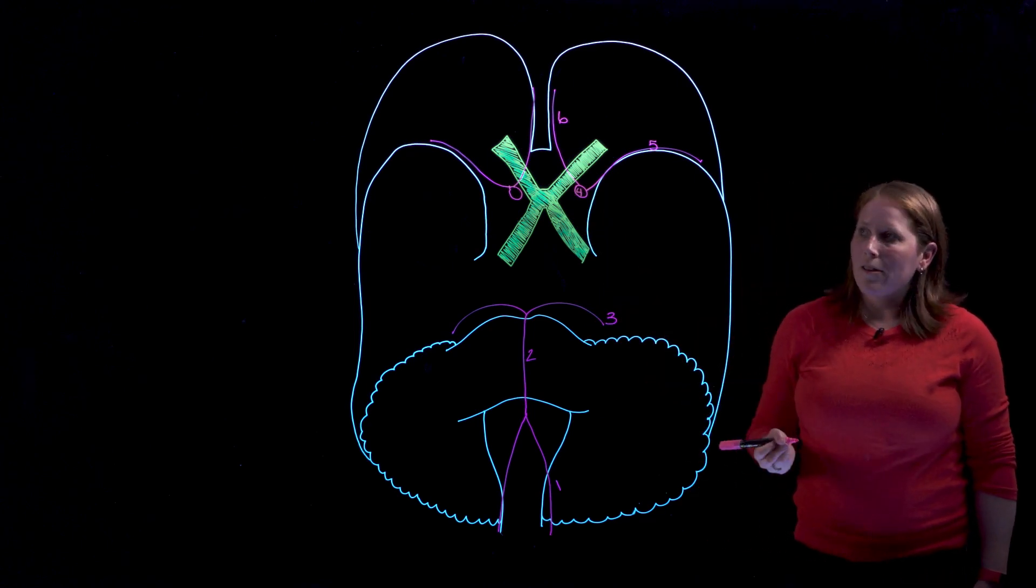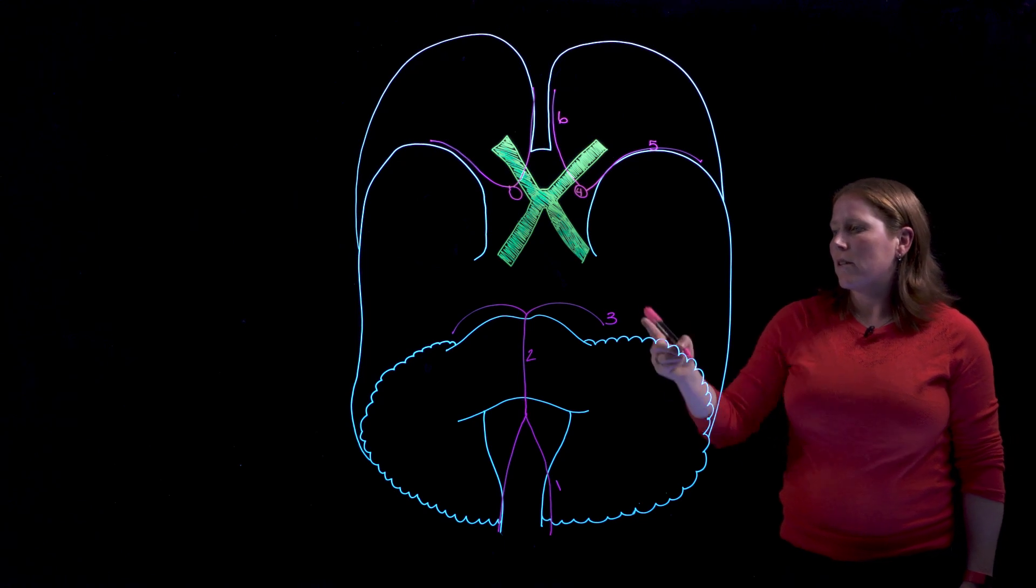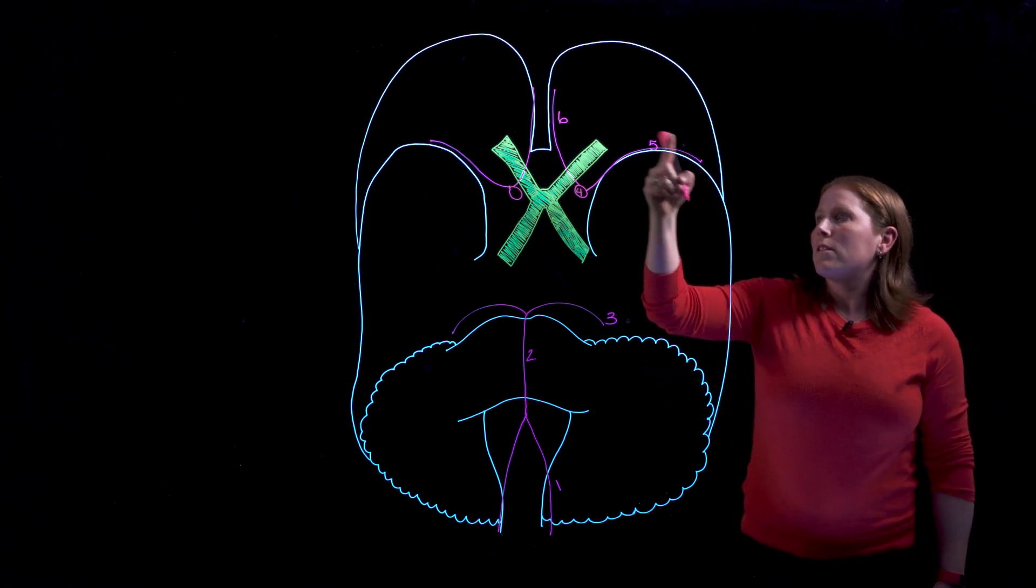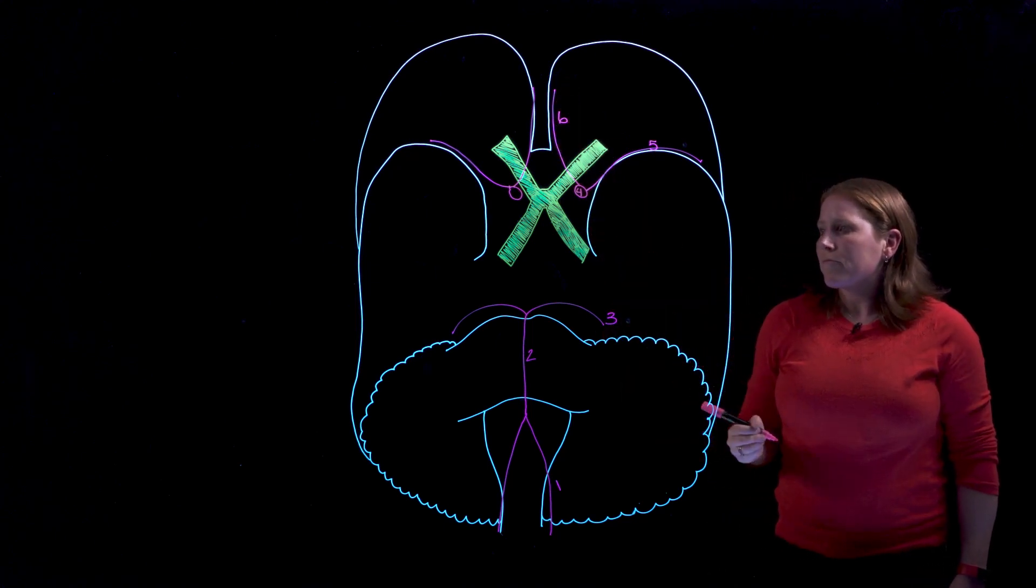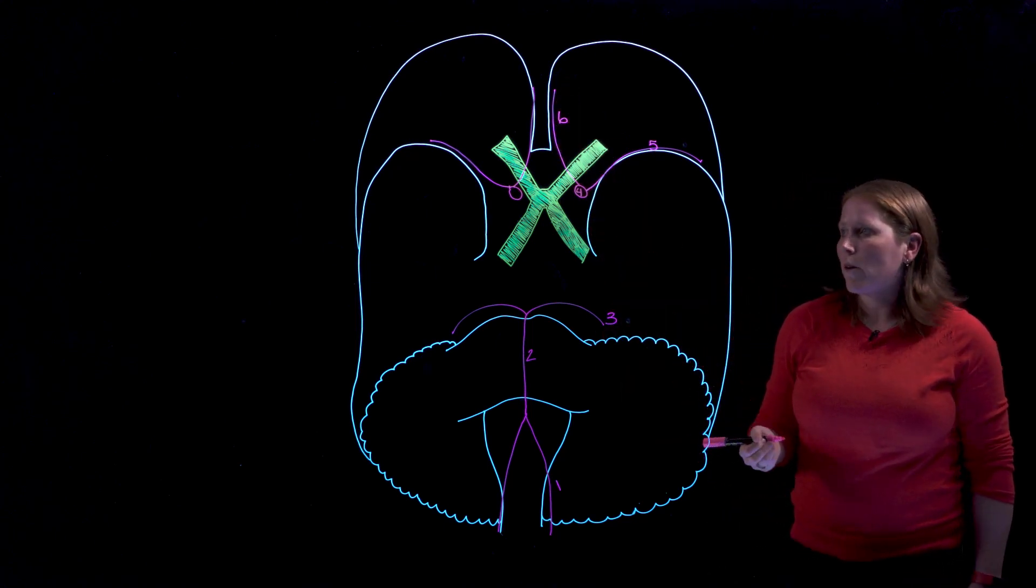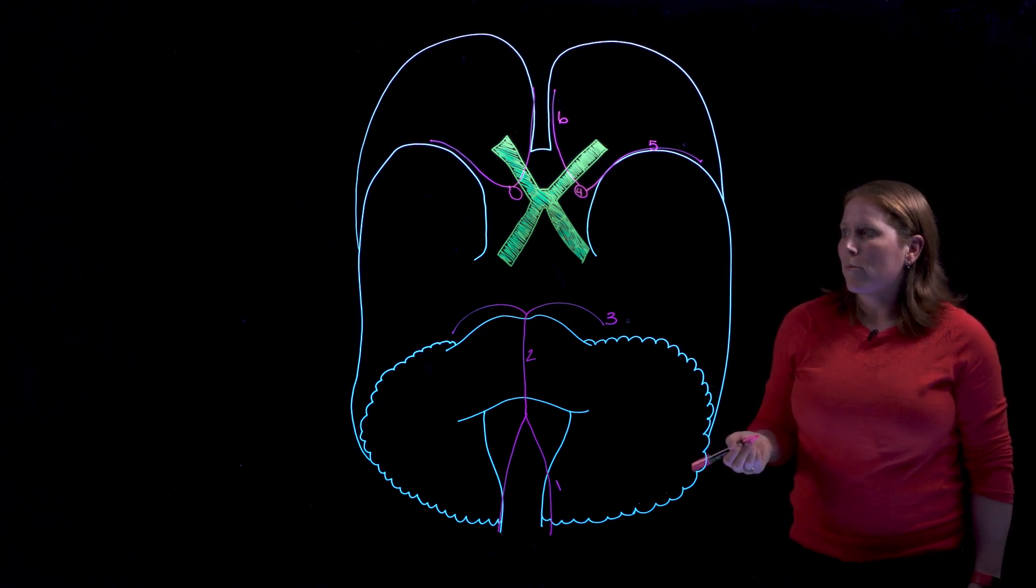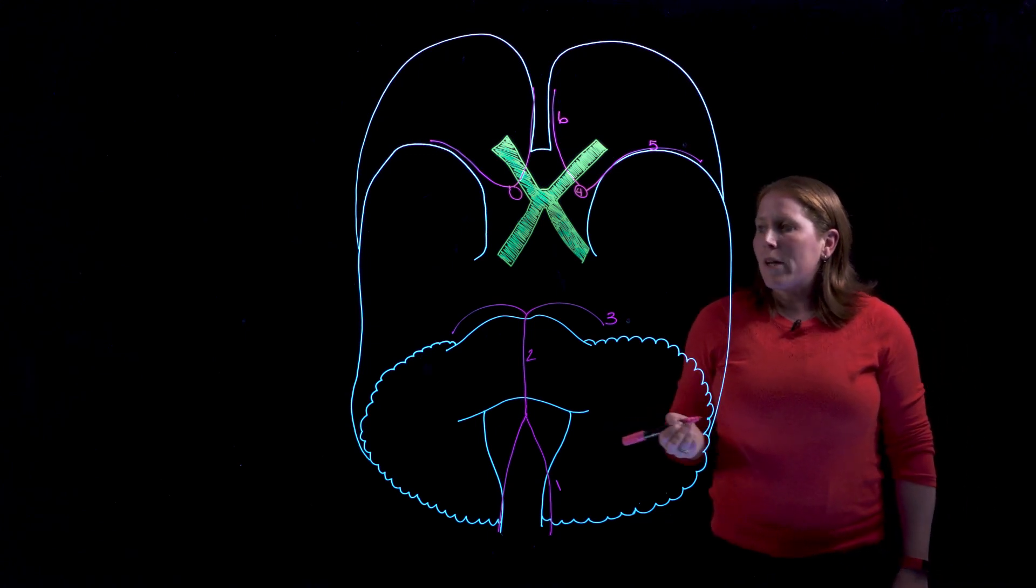So we now have three pairs of cerebral arteries. Posterior cerebral arteries, middle cerebral arteries and anterior cerebral arteries. Now we still don't have a circle we don't have an anastomosis yet and that redundancy is really important for the brain and so we're going to add in three additional branches.